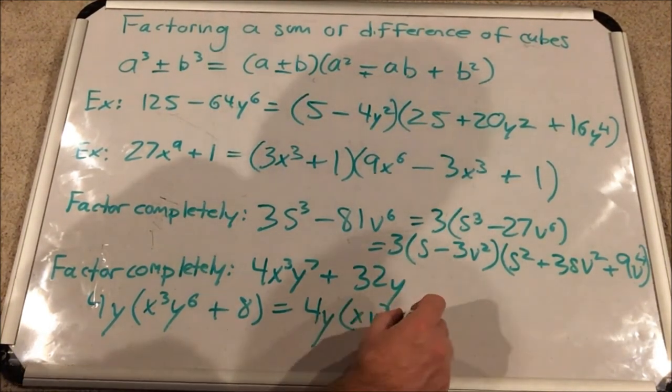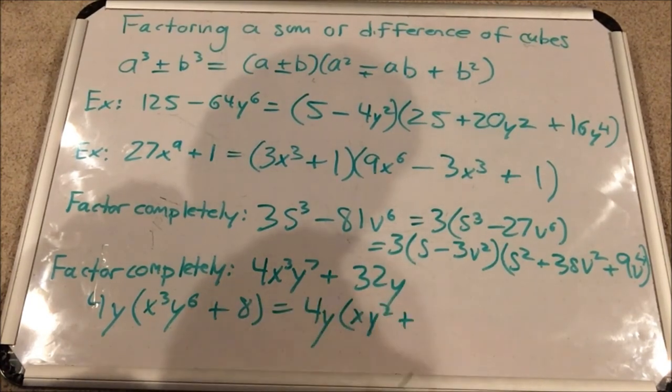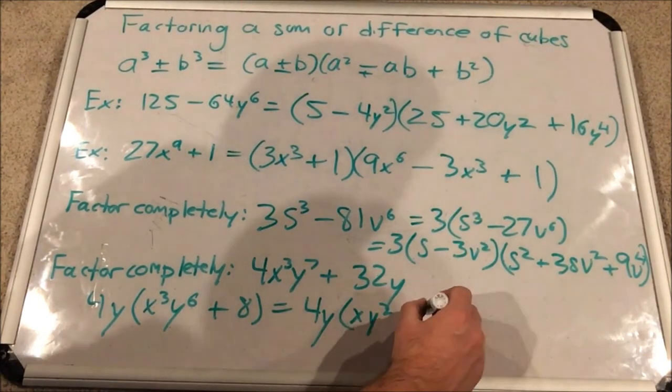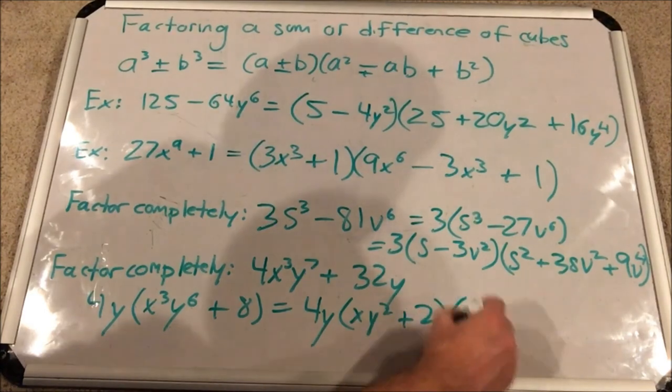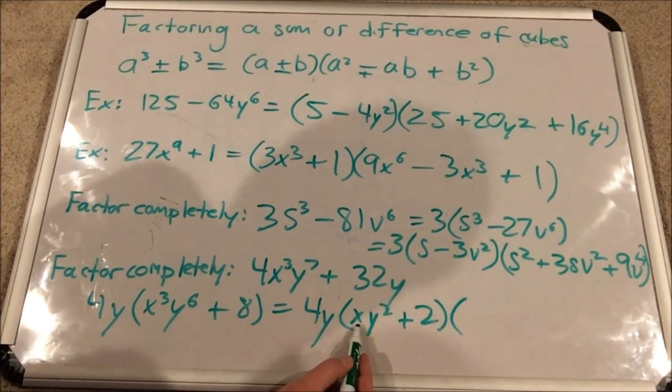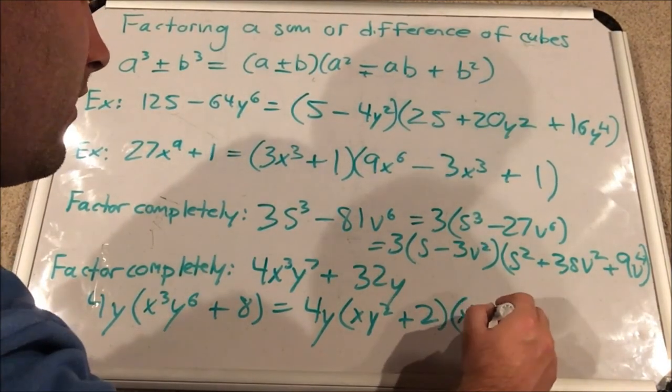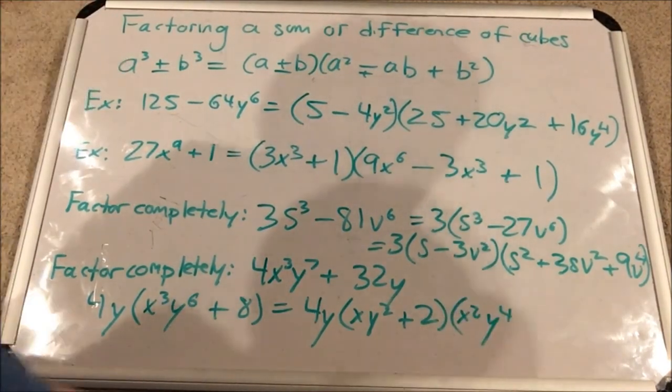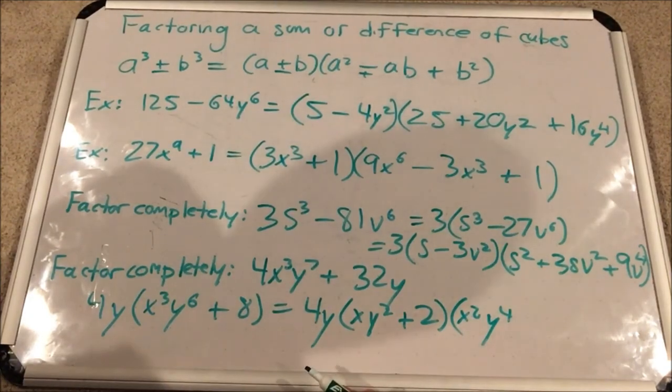Then I'm going to do the opposite sign. Oh, no, I'm going to do the same sign because we're in the very first part. Plus, and then the cube root of 8, 2. Next comes the three term quadratic. This term squared. So x squared y to the 4th. That's xy squared squared. Opposite sign. Minus the product of these two.